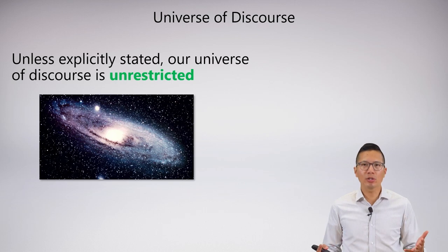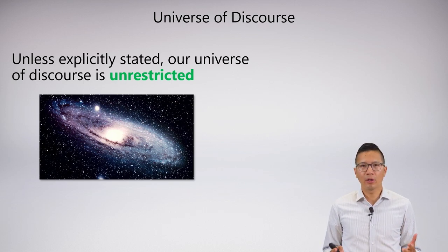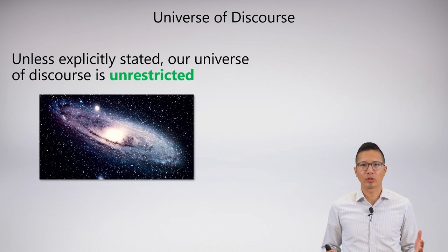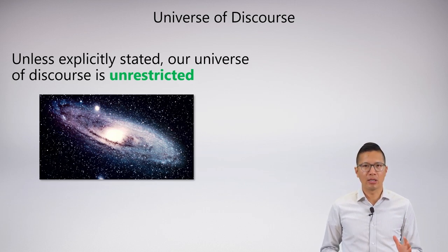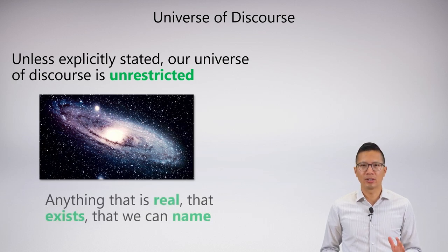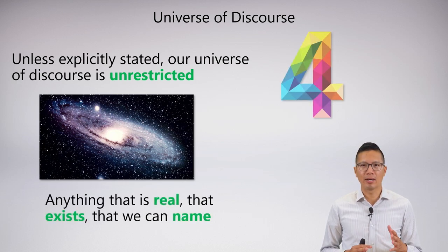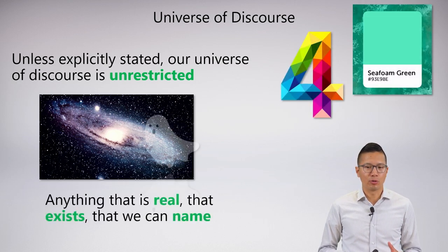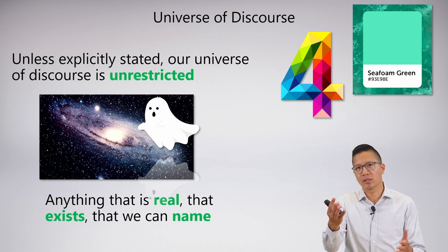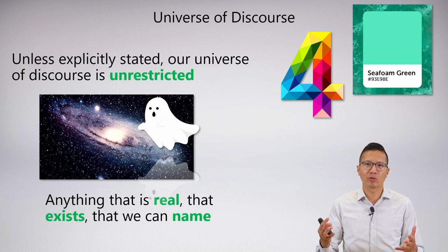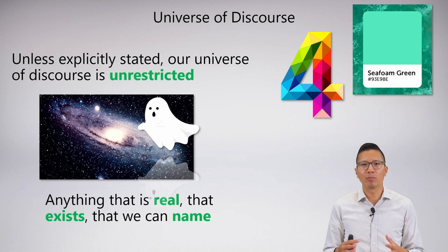So what is the universe of discourse? Well, unless explicitly stated otherwise, our universe of discourse is actually just unrestricted, which means absolutely everything in the universe that is real, that exists, that we can name. So that includes my shirt, this desk, that camera, etc. But it also includes other things, because we're being pretty loose on what we mean by real.